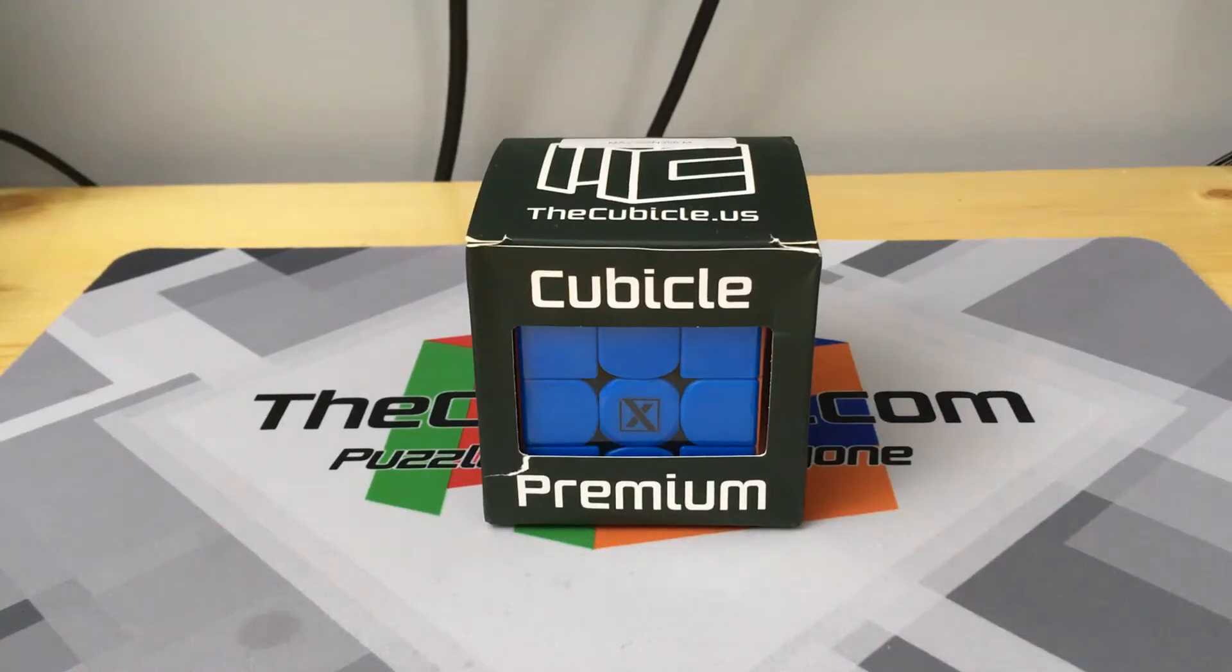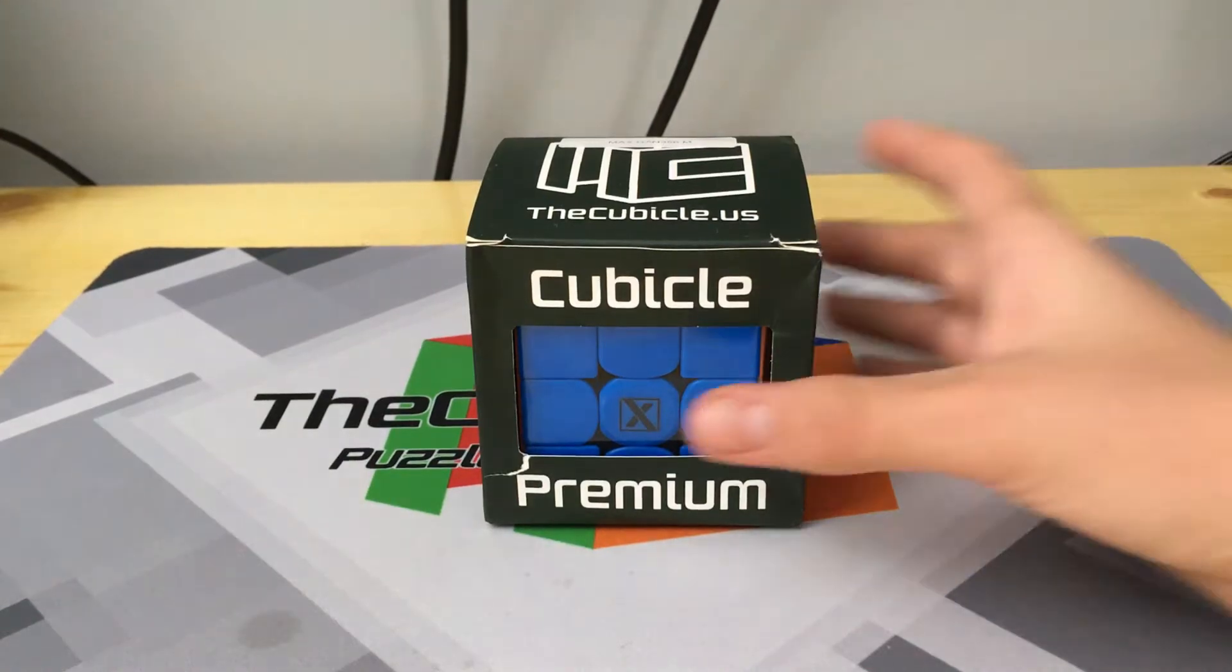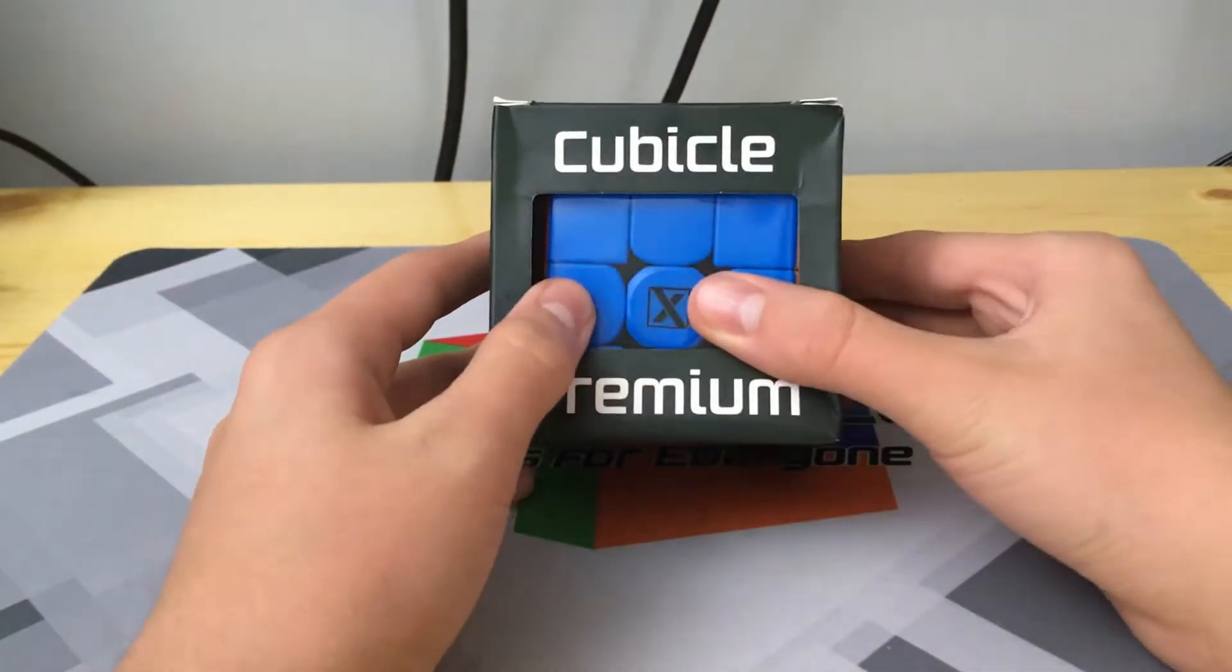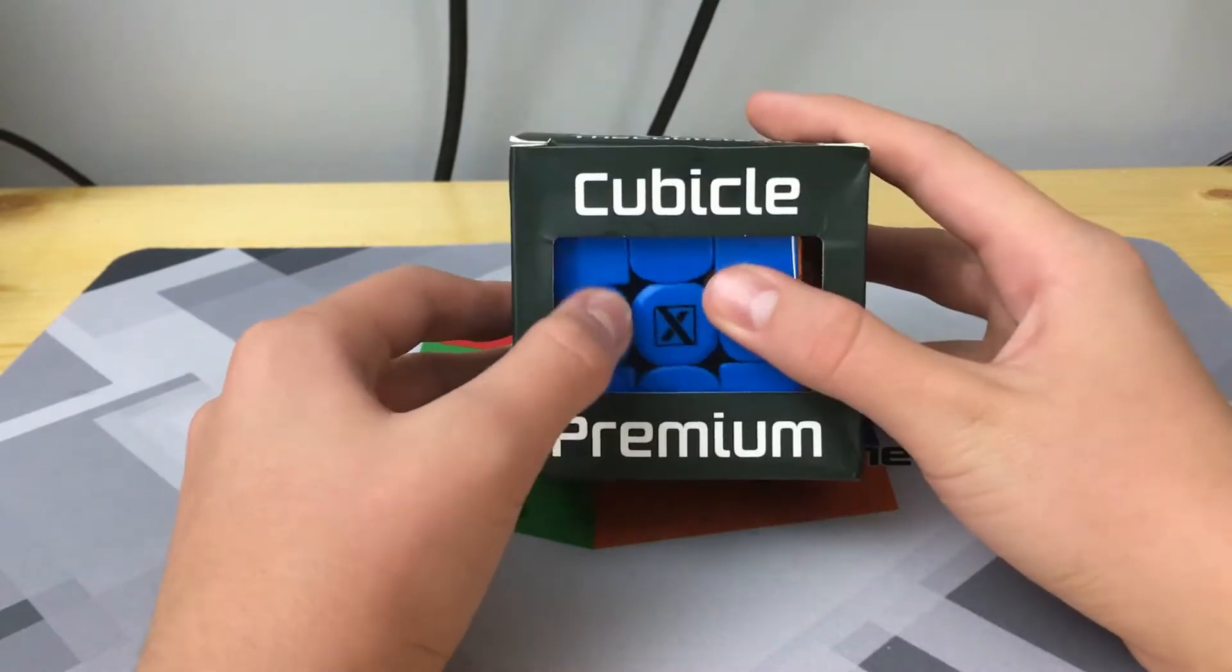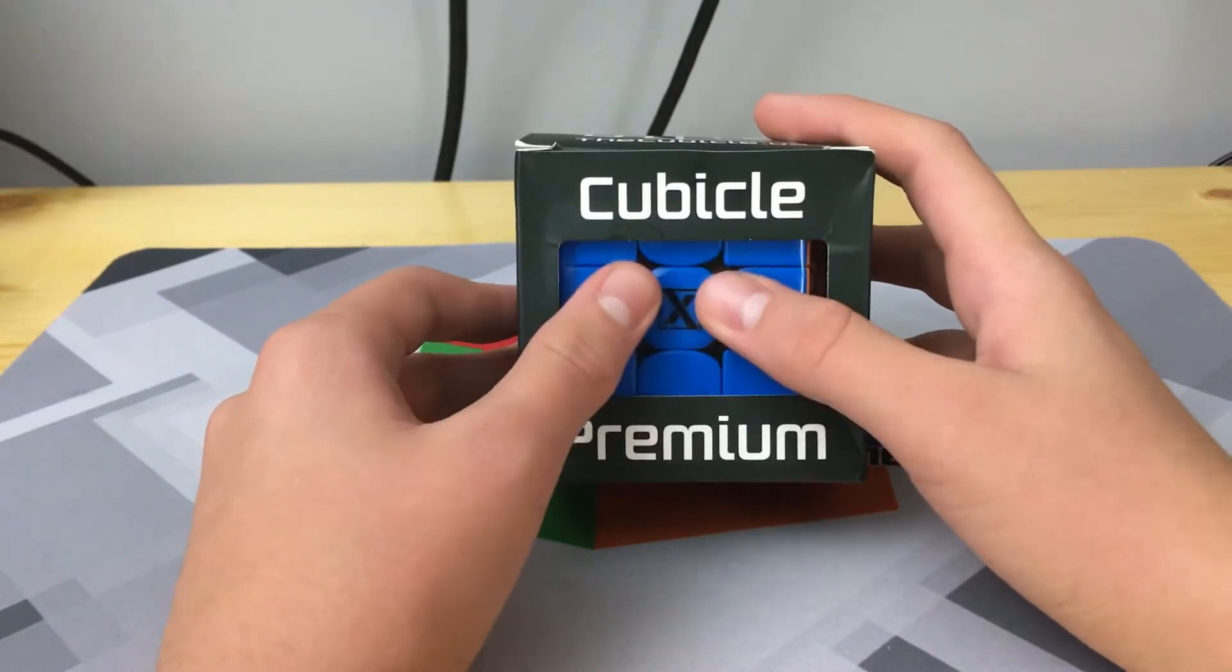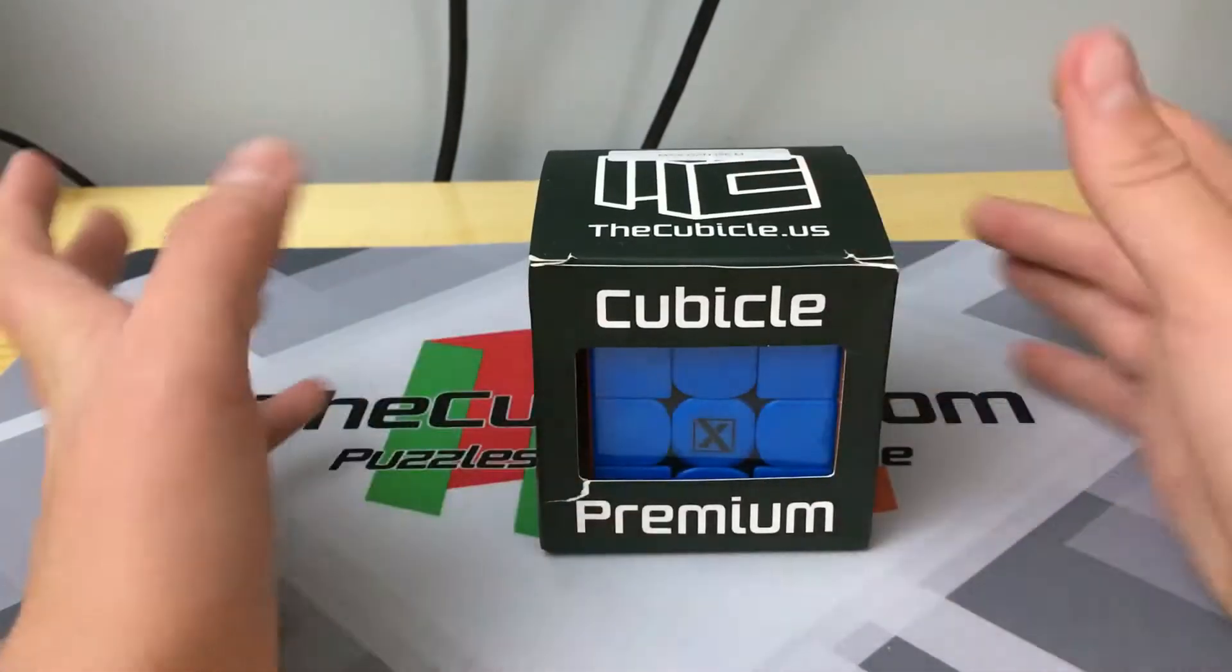Hey guys, what is going on? It's your boy from Azusa1 here. In this video we're going to be unboxing the GAN 356 M. This is the new cube by GAN, and by new I mean a while ago, but it's the newest one that I own.